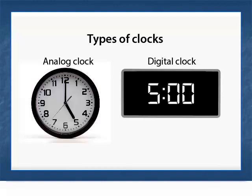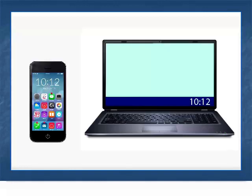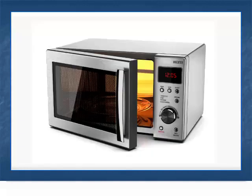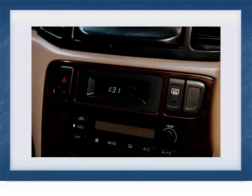The digital clock is found everywhere. You will find a digital clock on your phone, on your computer, on the television set, on the microwave oven, in the car — digital clocks are everywhere.